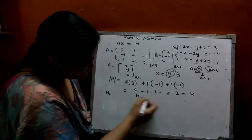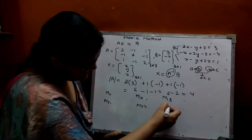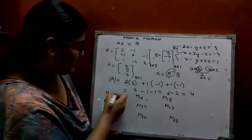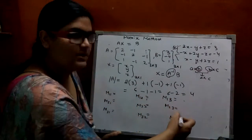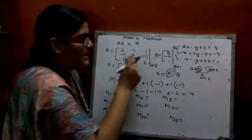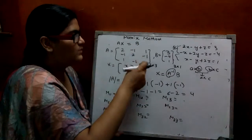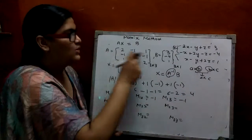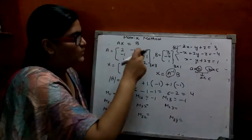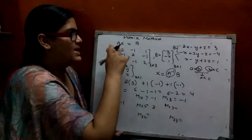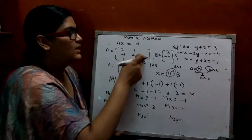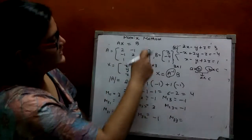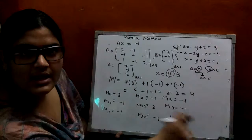Now find minors. For position 1,1: hide first row and column, you get 4 minus 1 = 3. For 1,2: minus 2 plus 1 = minus 1. For 1,3: minus 2 plus 1 = minus 1. For 2,1: minus 2 plus 1 = minus 1. For 2,2: 4 minus 1 = 3. For 2,3: minus 2 plus 1 = minus 1. For 3,1: 1 minus 2 = minus 1. For 3,2: minus 2 plus 1 = minus 1. For 3,3: 4 minus 1 = 3. These are our minors.